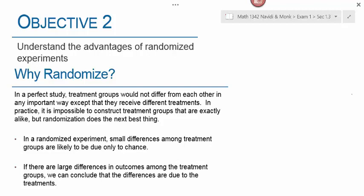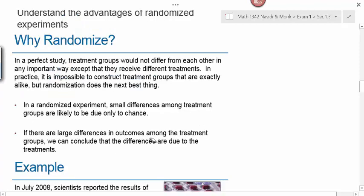Think about the teaching method example. When taking a randomized group of first graders, some in the treatment group will have higher IQs and some lower. In the control group using the current teaching method, there will also be students with higher and lower IQs, but on average their IQs should be about the same. There may be some small differences. If there's a large difference in outcome — such as the new method yielding higher test pass rates — we can conclude the new teaching method was effective.